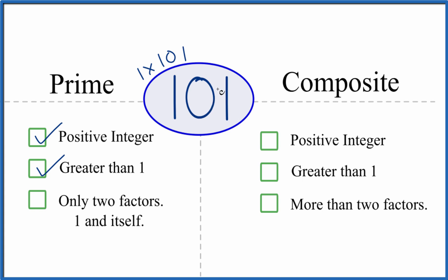After a bit of work, you'll find out that there are only two factors that go into 101, and that's what makes it a prime number. It's not composite, even though it's positive greater than 1. It's just that we don't have more than two factors.